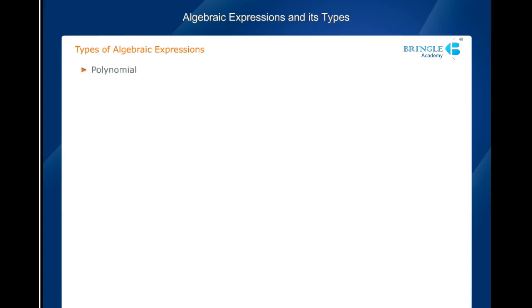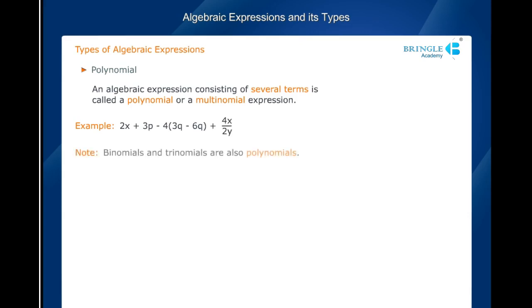Polynomial: An algebraic expression consisting of several terms is called a polynomial or a multinomial expression. For example, 2x + 3p - 4(3q - 6q) + 4x/2y. Note, binomials and trinomials are also polynomials.